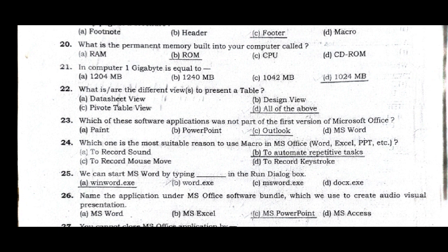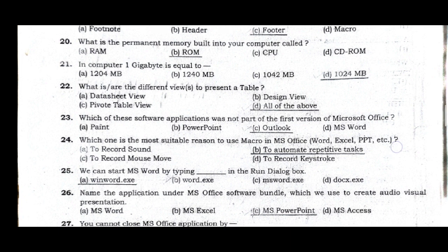Question 23: Which software application was not part of the first version of Microsoft Office? The correct answer is option C, Outlook. Question 24: Which is the most suitable reason to use Macro in MS Office (Word, Excel, PPT, etc.)? The correct answer is option B, to automate repetitive text.